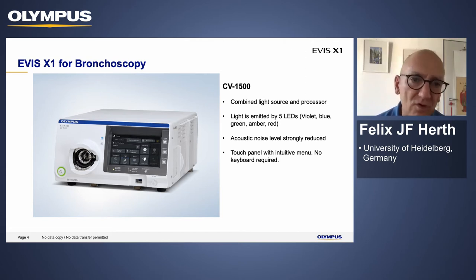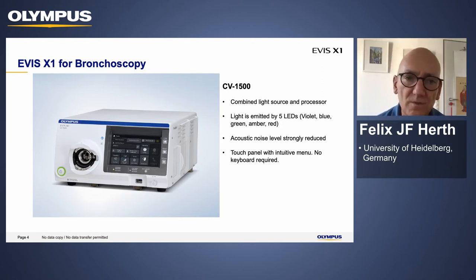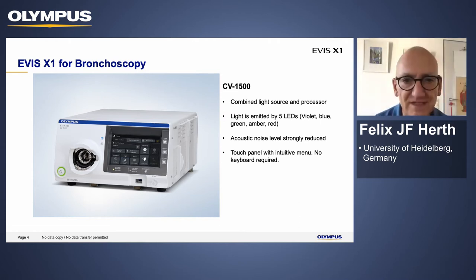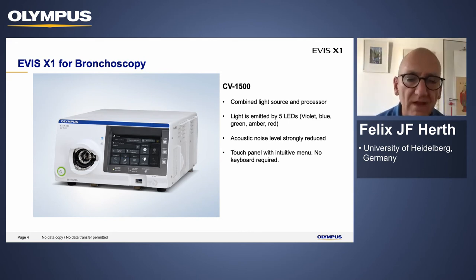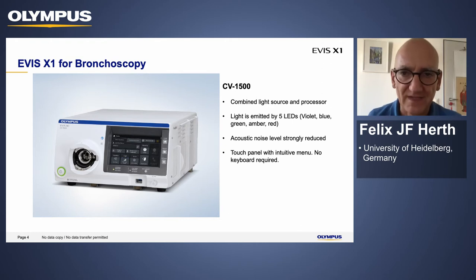For the first time, Olympus was able to combine their two worlds, so even Asia and UK can use it with U-pins. Everything is now in one single processor. For the light, we are using LED lights with five different LEDs. There's also a new wavelength we use — amber — which I will show you later why we need that. With this compact machine, you can have a lot of fancy technologies.